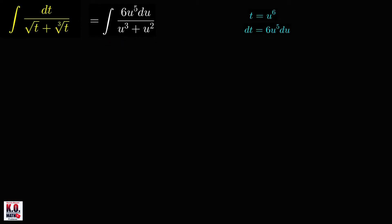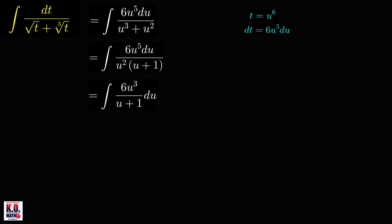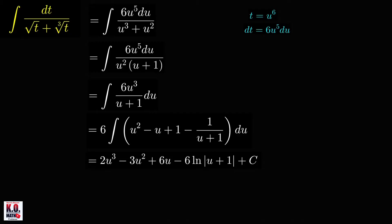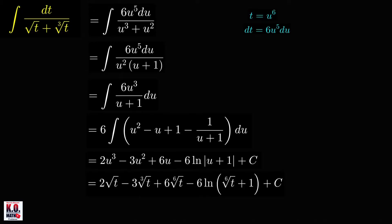First, we see a common factor u squared in both numerator and denominator, so we can factor that out. Cancelling the common factor, we get the integral of 6u cubed over u plus 1 du. Using the same approach as the previous problem, this gives us 2u cubed minus 3u squared plus 6u minus 6 ln of absolute value of u plus 1, plus c. Using the substitution equation, we write our answer in terms of t as 2 square root of t minus 3 cube root of t plus 6 times the 6th root of t minus 6 ln of the 6th root of t plus 1, plus c.